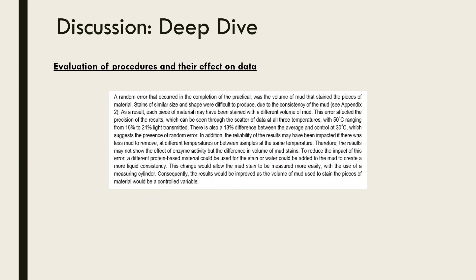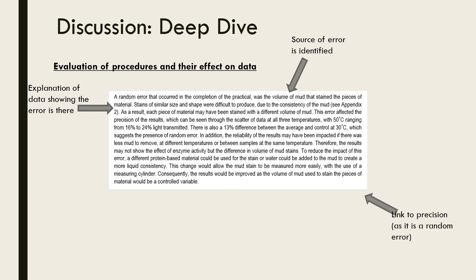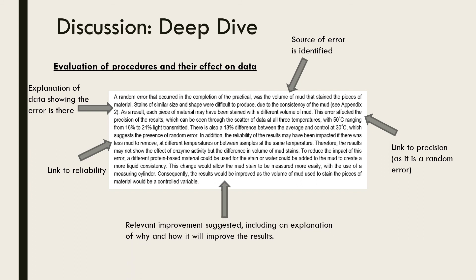This is a random error example. Again, the student begins by identifying the source and type of error. This is then followed by an explanation of how the data indicates the presence of random error — they refer to scatter within the results, providing specific values. This naturally leads into a discussion of the data's precision and reliability. Finally, like last time, the student finishes the paragraph by suggesting an improvement and explaining how and why it will improve the results.